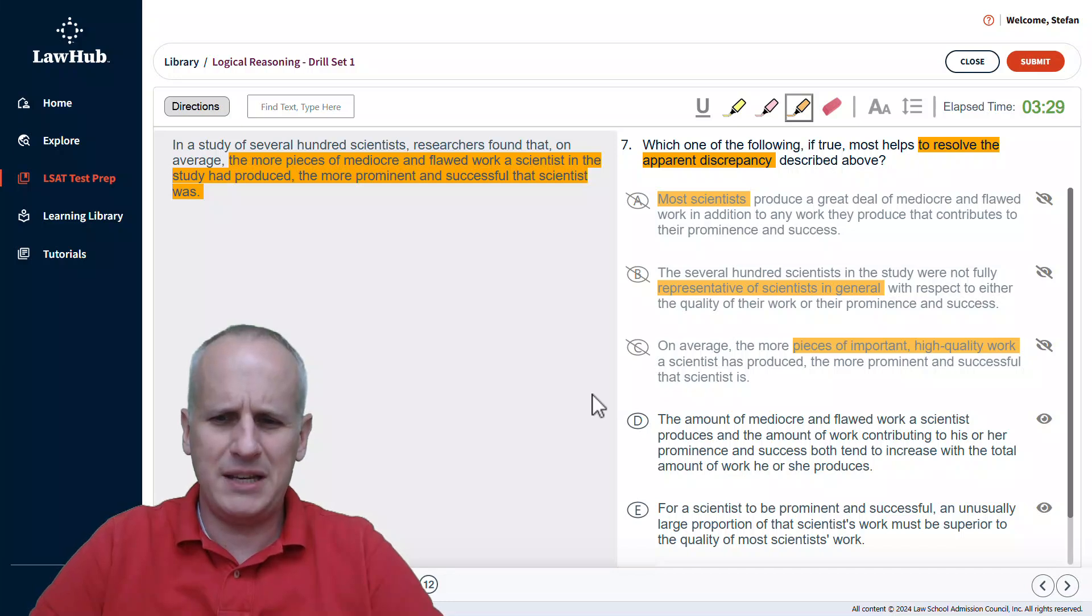Then, choice D, the amount of mediocre and flawed work a scientist produces and the amount of work contributing to his or her prominence and success both tend to increase with the total amount of work he or she produces. Now, this is definitely LSAT legal kind of just word salad, but it's actually the exact prediction we mentally came up with at the beginning of this problem. It's saying that if you're going to become a prominent and successful scientist, you're going to have to produce mediocre and flawed work on that path to prominence and success. So, we will select D.